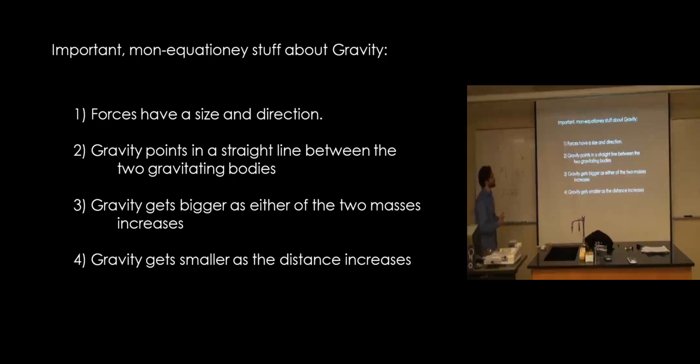Okay, so almost in summary, this is the non-equation stuff about gravity that you should know. Forces, like velocities, have a size and a direction, so you've got to indicate them like an arrow. It points in a straight line in between the two gravitating bodies. It's always attractive. Things never repel by gravity. And then it gets bigger with the two masses increasing, and it gets smaller as the distance increases. And that actually falls off and gets big really quickly. So if you ever looked at the graph of a function that goes like 1 over r squared, it blows up, which becomes important in a bit. Any questions about that stuff?